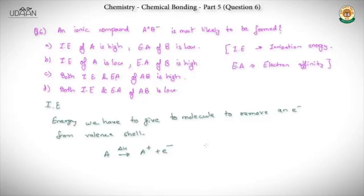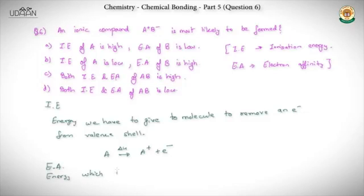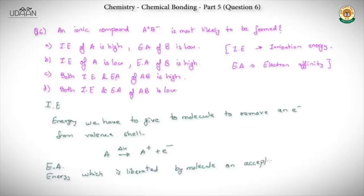The second term we're looking at is electron affinity. Electron affinity is the energy which is liberated by a molecule or an ion on accepting an electron into its valence shell. That's very important — the valence shell.